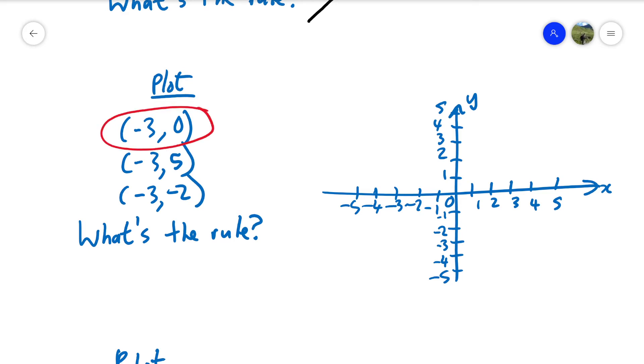Plot the first one in red. X is minus three, y is zero. We can do the next one in green. X is minus three, y is five. Let's do the next one in purple. X is minus three, y is minus two.